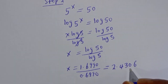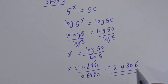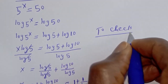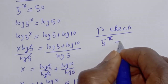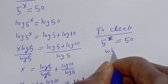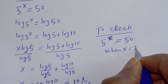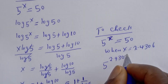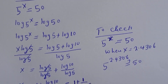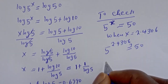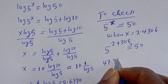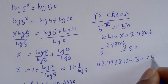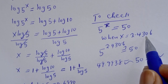2.4306 — this is the final answer. Let's check to confirm if our answer is right or wrong. 5 raised to power s is equal to 50 when s is equal to 2.4306. 5 raised to power 2.4306 is equal to 49.9938, which is approximately equal to 50, satisfying the given equation at s equal to 2.4306.